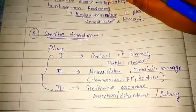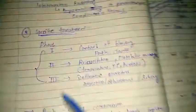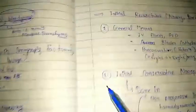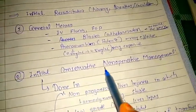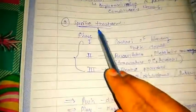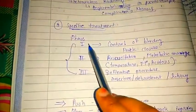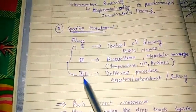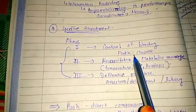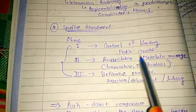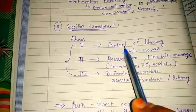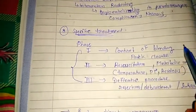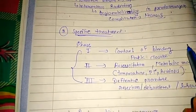For specific treatment, there are three phases. First, control the bleeding — any measure that controls bleeding should be taken first, such as packing or other methods. This is the priority step.